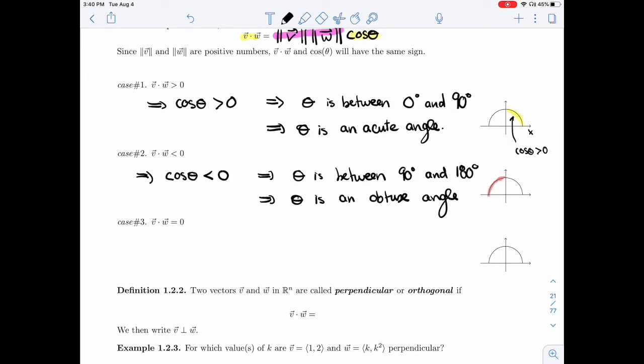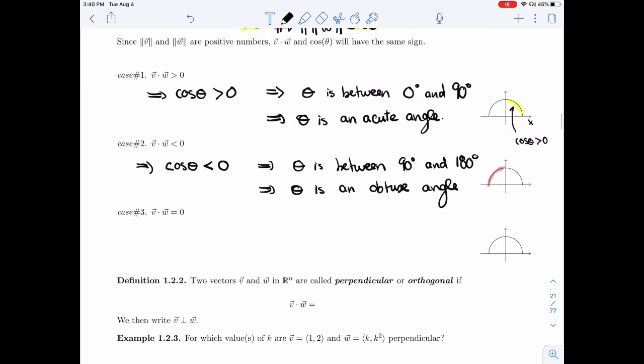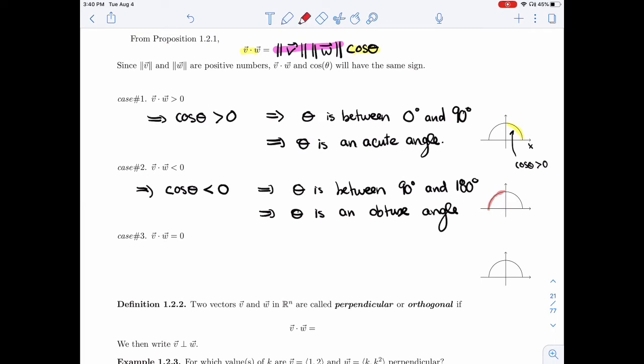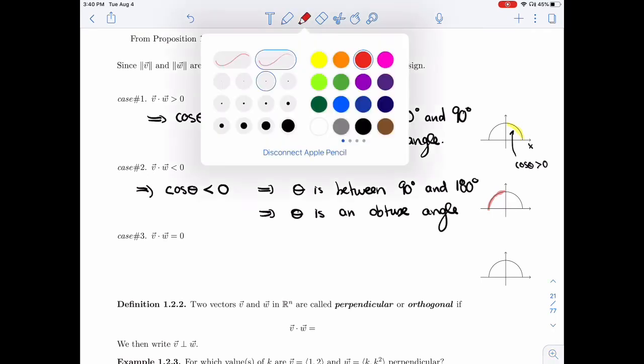So acute angle, obtuse angle. So now let's do case number three. What if it's actually equal to zero? So for this to be zero, you would need cosine to be zero.